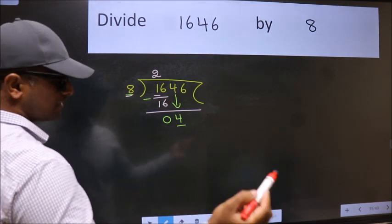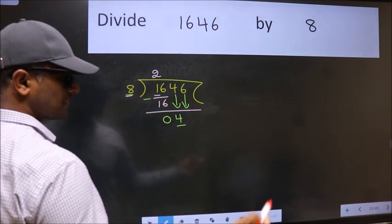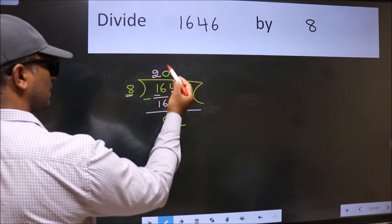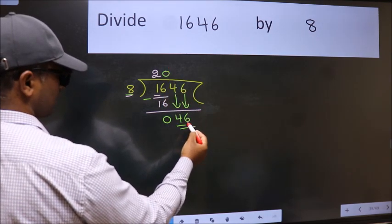we should bring down the second number. And the rule to bring down the second number is put 0 here. Then only we can bring this number down. So, 46.